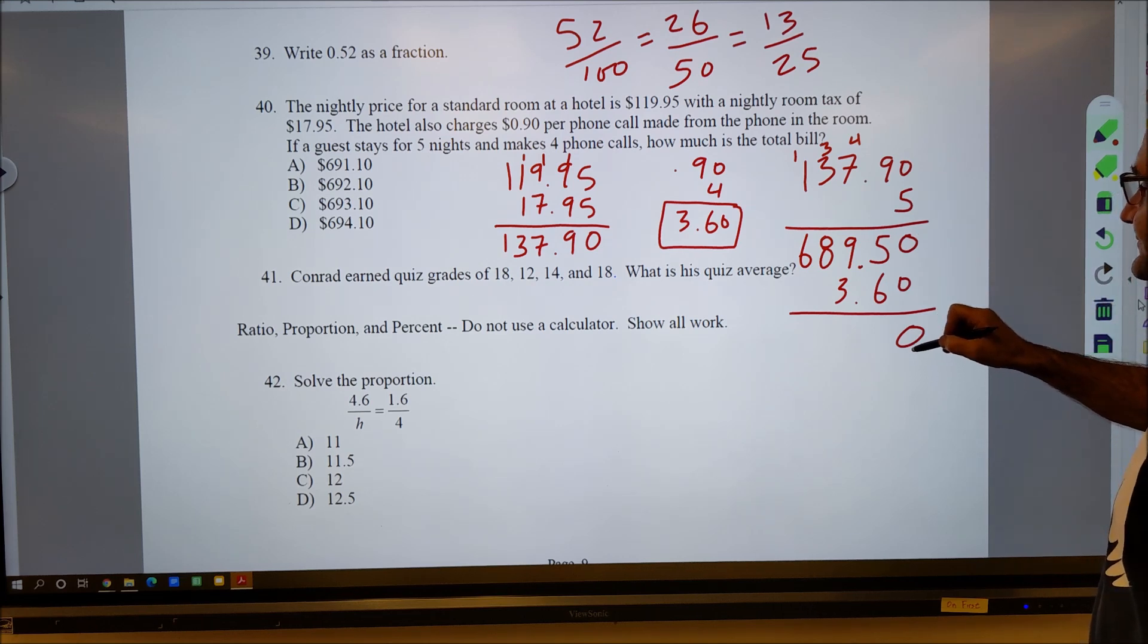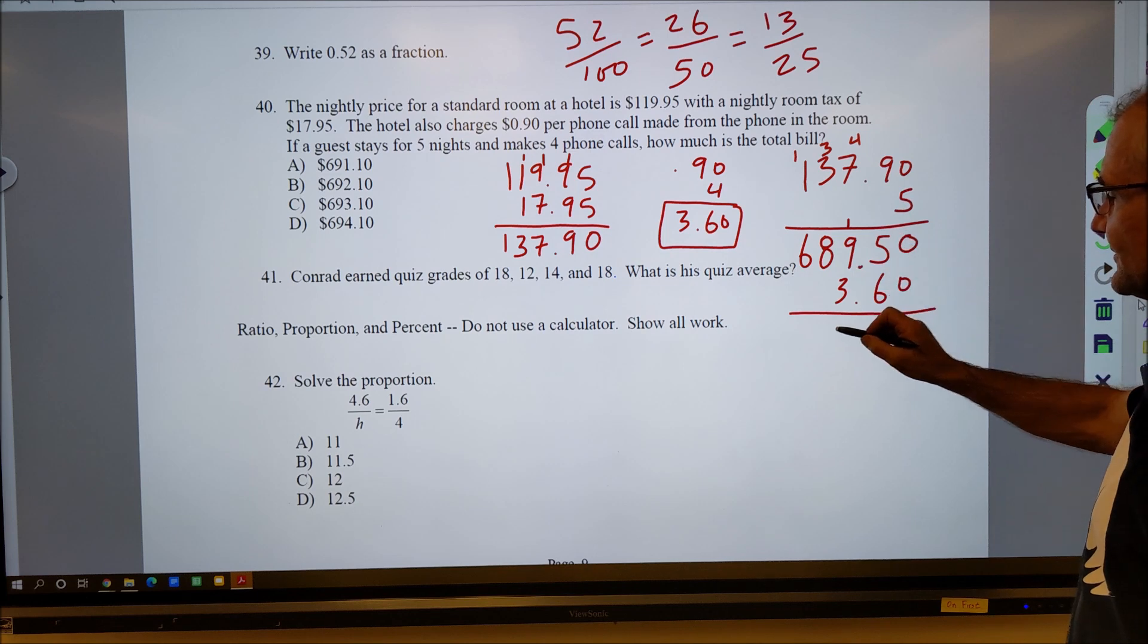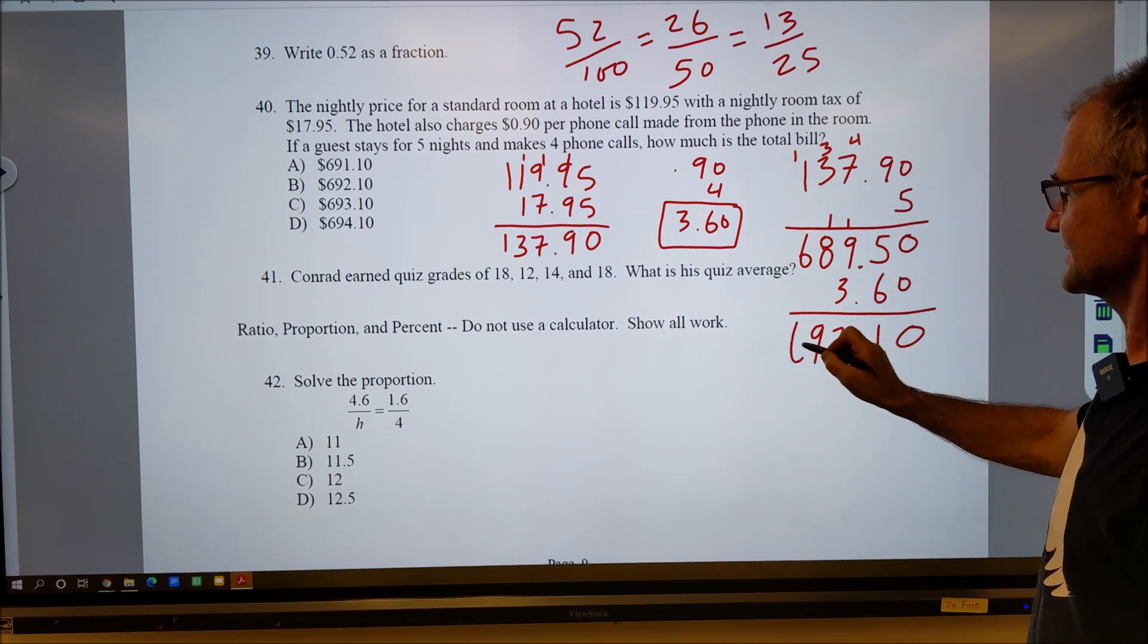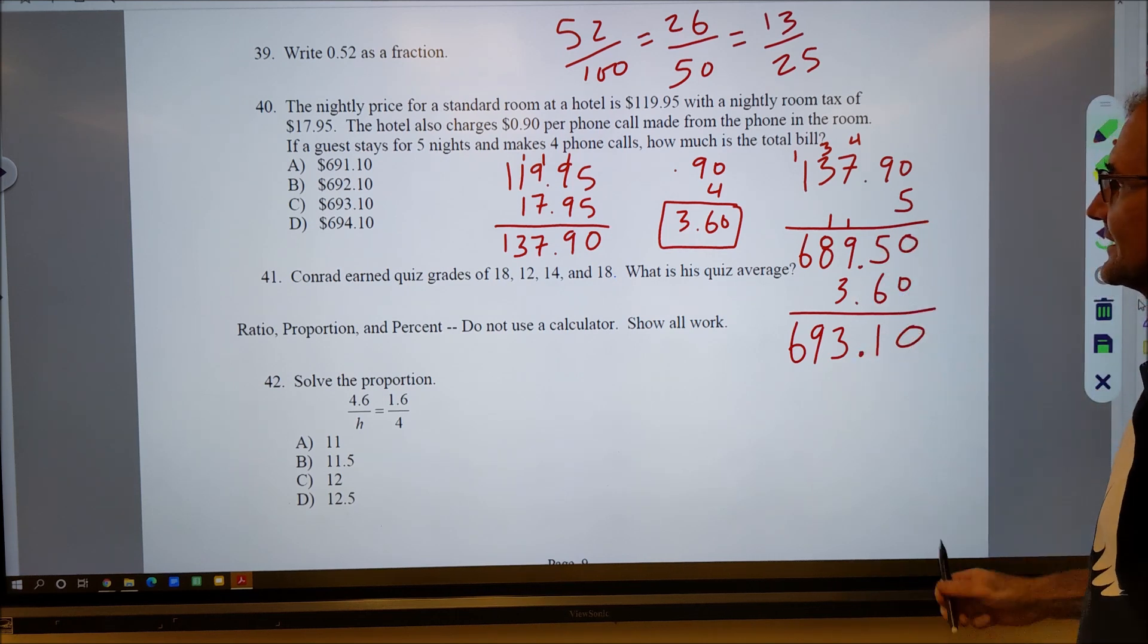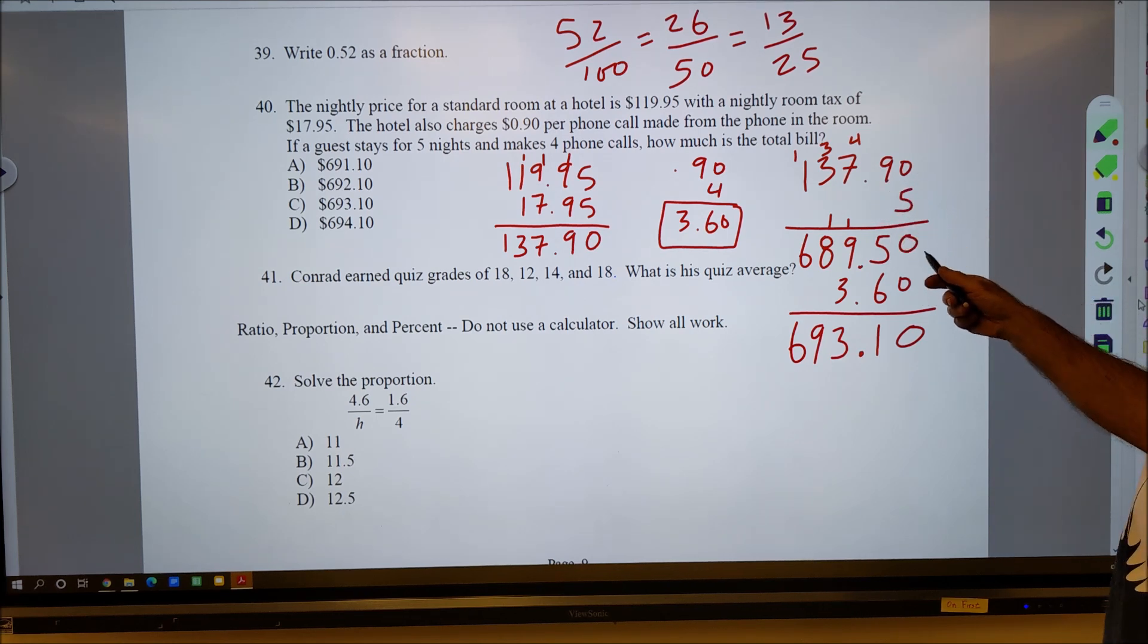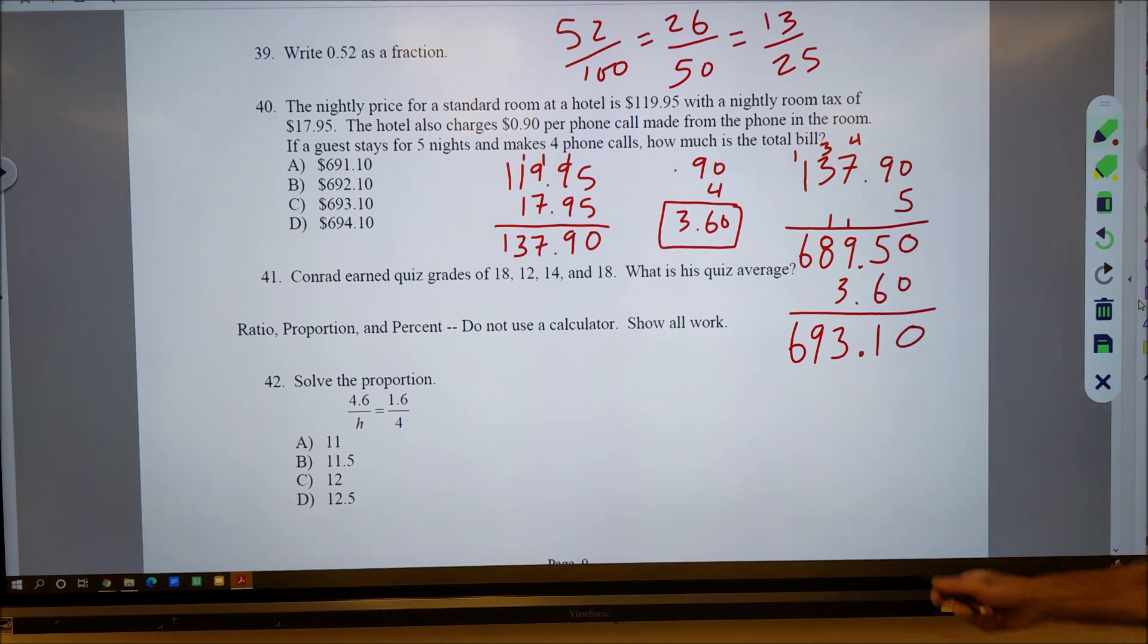And then I got to add the $3.60 in phone charges to it. I'm adding straight down: 5 and 6 is 11, carry the one, 10, 13, carry the one, 8 and 1 is 9 and 6. And then the decimal place in addition comes straight down. In multiplication, I keep track of how many places over the decimal is and then I count over. So I'm over one, two, I'm over one, two, and then adding, they come straight down. So that's the total price for the hotel.